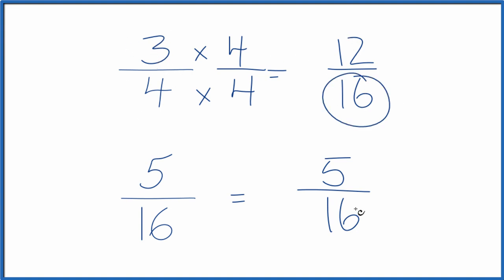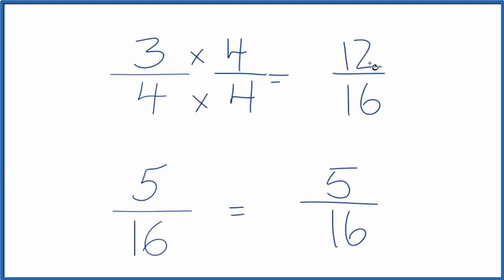So now that we have the same denominator, we can compare the numerators. And that'll tell us which is greater, 3 fourths or 5 sixteenths. Since 12 is larger than 5, 12 sixteenths is larger than 5 sixteenths. And 3 fourths, that's greater than 5 sixteenths.